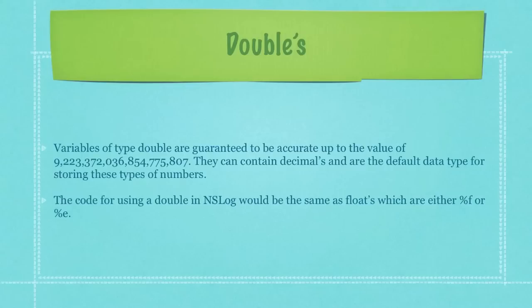Variables of type double are guaranteed to be accurate up to the value you can see here on the screen, and they can contain decimals and are the default data type for storing these types of numbers, being numbers with decimal points. The code for using a double in NSLog would be the same as floats, which is the percent sign followed by the letter F, or the percent sign followed by the letter E.